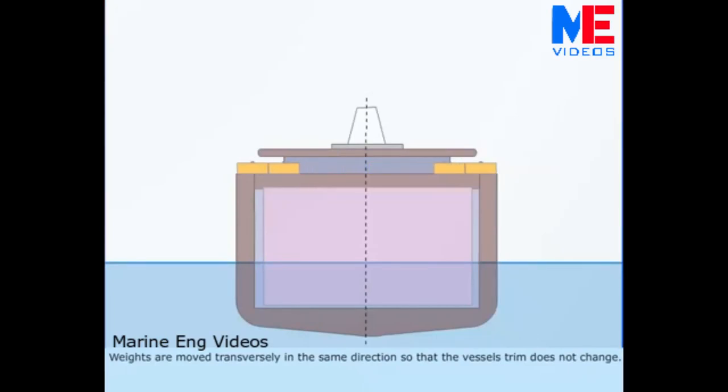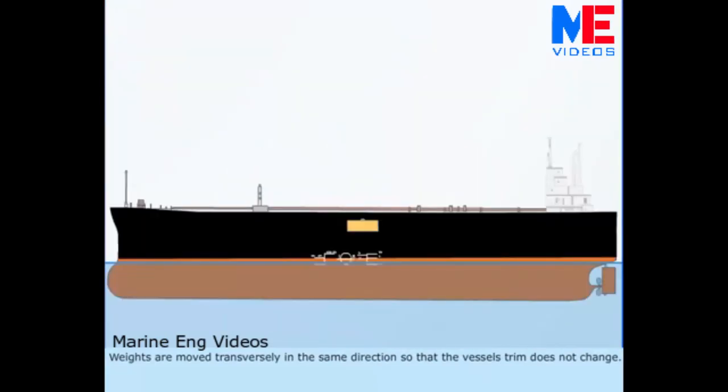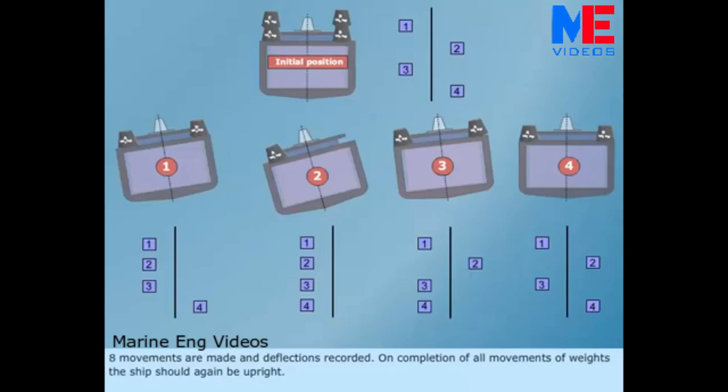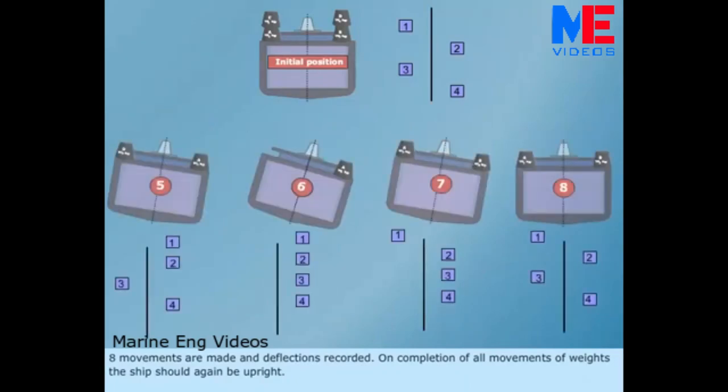Weights are moved transversely in the same direction so that the vessel's trim does not change. Eight movements are made and deflections recorded. On completion of all movements of weights, the ship should again be upright.